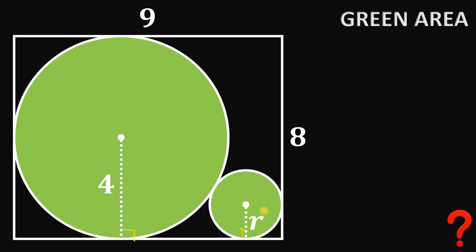If we find the value of R, we're done, because the green area is just the sum of the areas of these two circles. To get the value of R, we connect the two centers. The measure of this segment connecting the centers is just 4 plus R — the radius of the big circle plus the radius of the smaller circle.